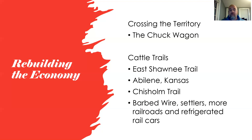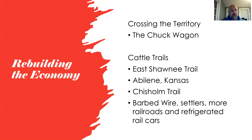Conditions varied greatly — drought could make water scarce, heavy rain could bog the herd down in mud. The trail was never the same experience twice because weather played a huge role. Lightning and thunderstorms at night could scatter the cattle, requiring the whole next day to round them back up. It was a very difficult, hard-working life.